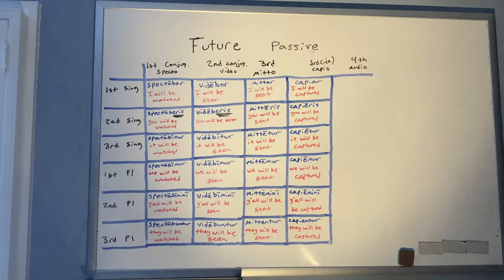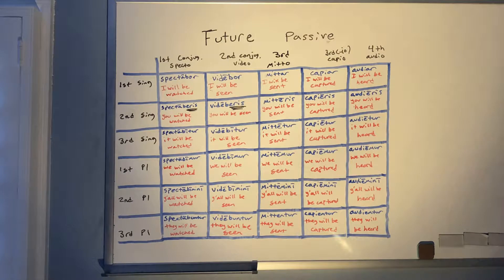Fourth conjugation future passive with AUDIO: AUDIAR (I will be heard), AUDIERIS (you will be heard), AUDIETUR (it will be heard), AUDIEMUR (we will be heard), AUDIEMINI (y'all will be heard), AUDIENTUR (they will be heard). For third, third-IO, and fourth, it's a straight swap: remove the active ending, add the passive personal ending.